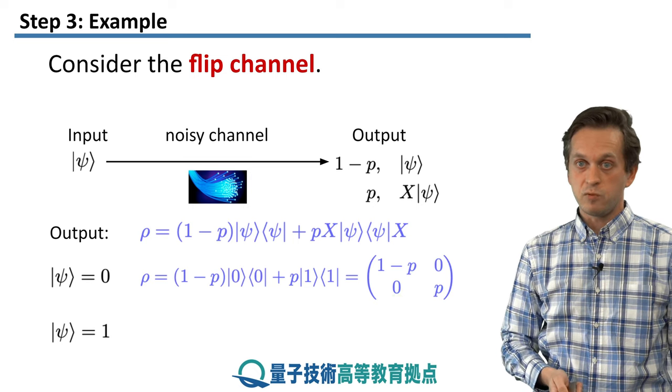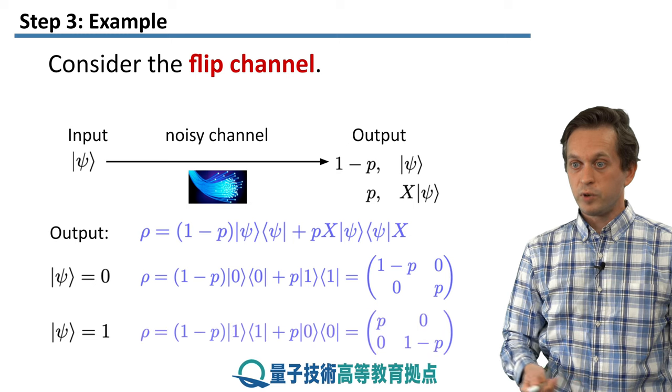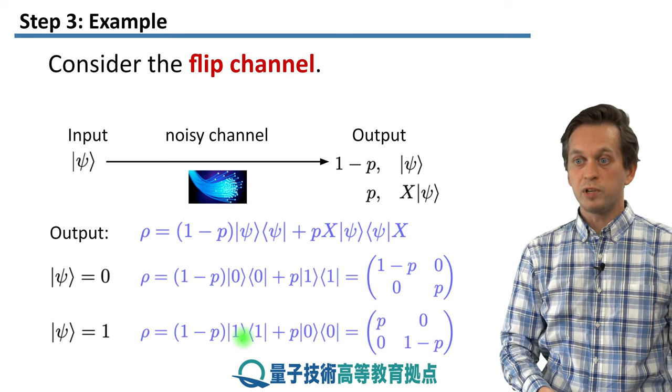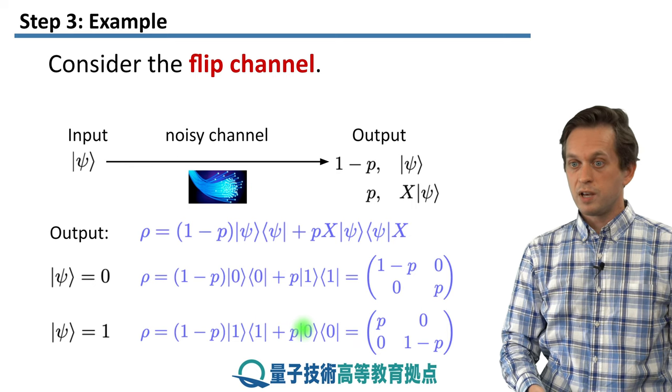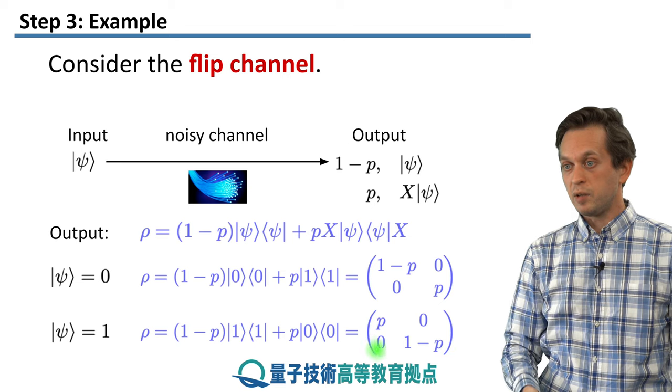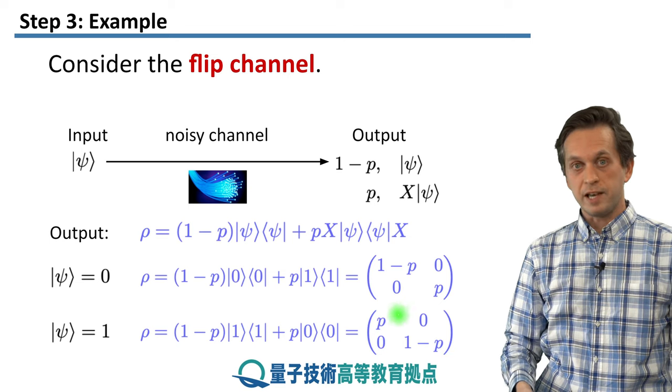Similarly, when we feed in the state 1 at the beginning, we get the following. Here, with probability 1 minus P, we leave the state alone, so it remains 1. And with probability P we flip it, so we change 1 into a 0. And now in matrix representation, it looks like that.